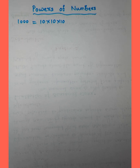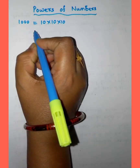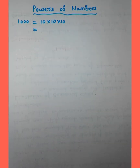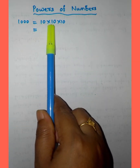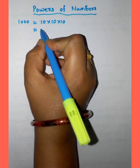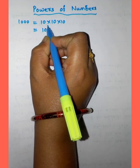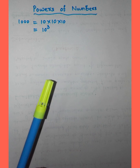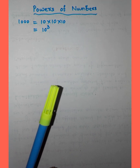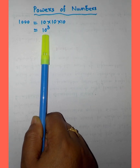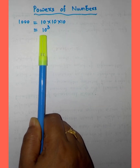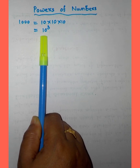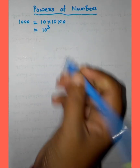It is easier to write. Then I can also write 10 into 10 into 10 like this. In this expression, 10 is the base and 3 is the index or power.